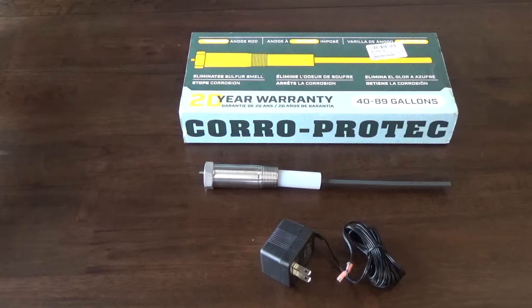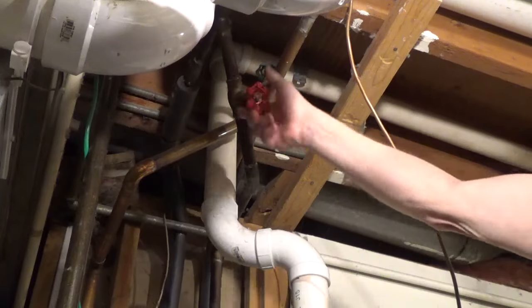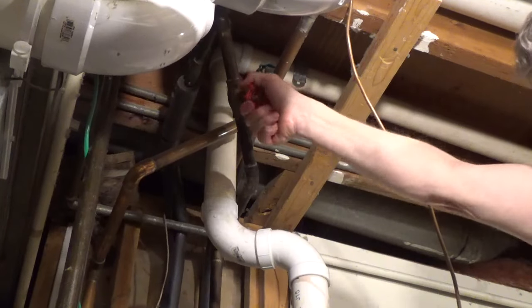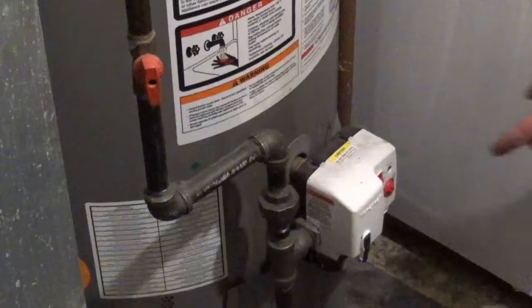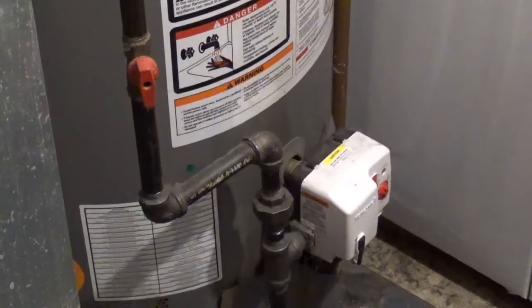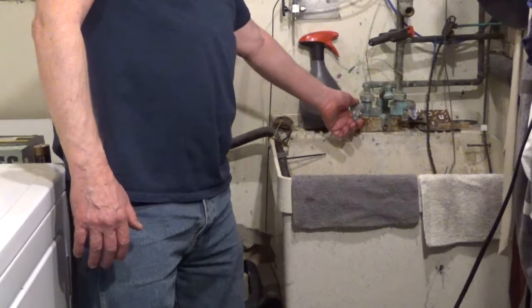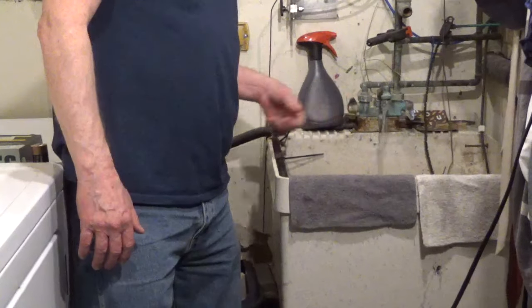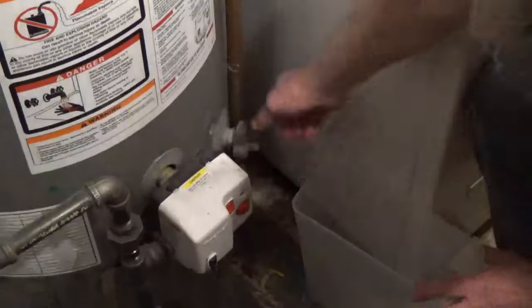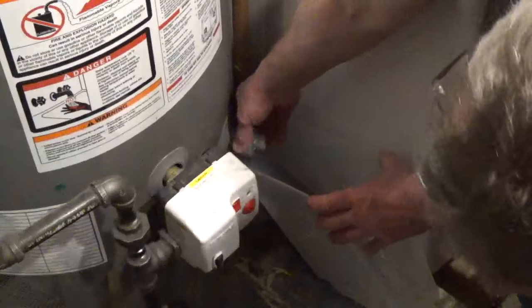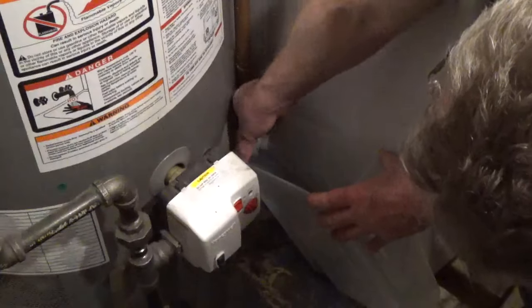To install a Koro Pro-Tec powered anode rod, turn off the water going to the water heater. Turn off the gas or electric to the water heater. Open the hot side of a faucet and keep it open. Drain a couple of gallons of water from the tank so the water level is just below the top of the tank.